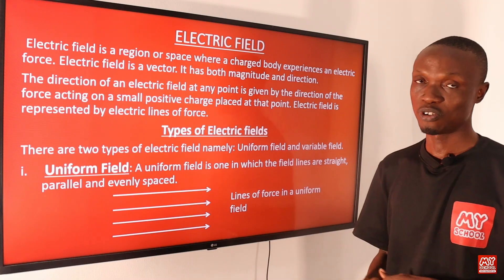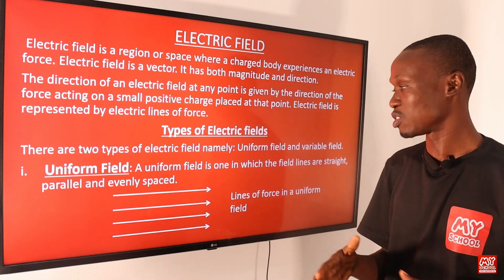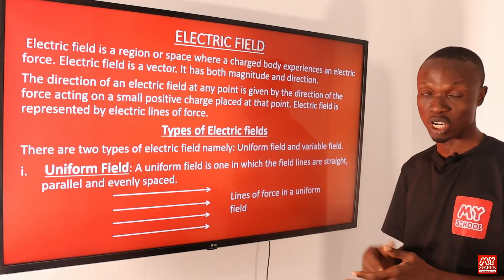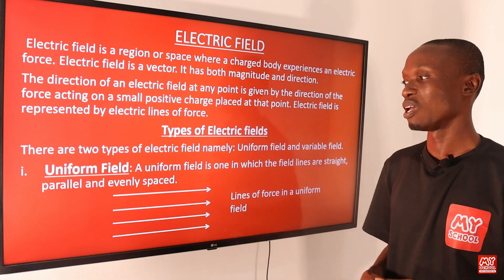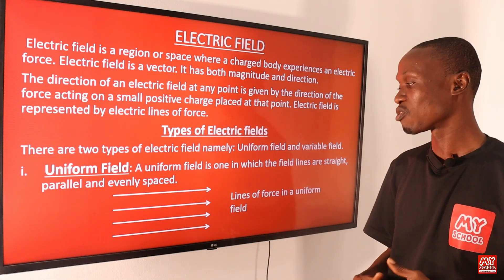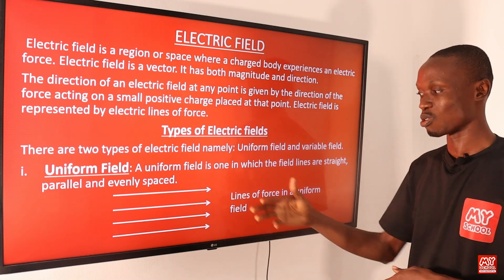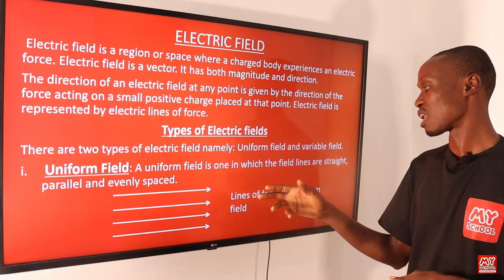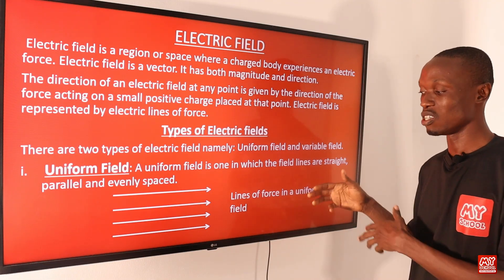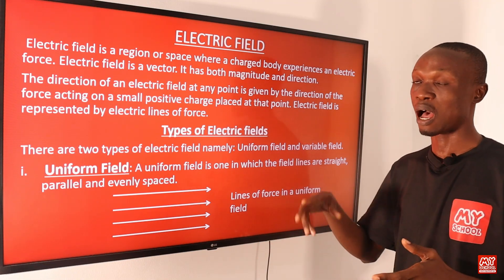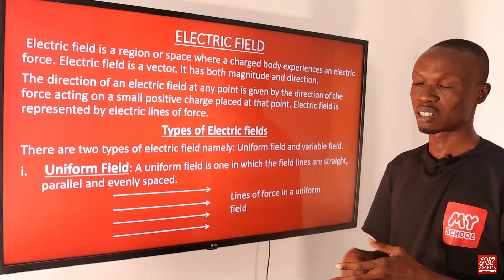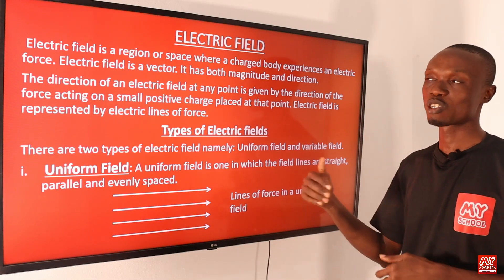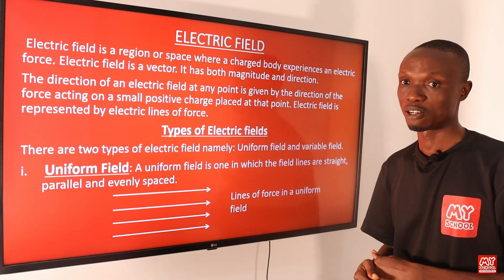A uniform field is one in which the field lines are straight, parallel, and evenly spaced, as you can see in the diagram. These are lines of force in a uniform field — they are straight, parallel, and evenly spaced.